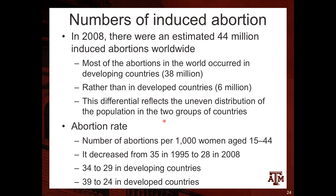This differential reflects the uneven distribution of population in the two groups of countries. The abortion rate — the number of abortions per 1,000 women between 15 and 44 years of age — decreased from 35 per 1,000 women in 1995 to 28 in 2008. These numbers declined from 34 to 29 in developing countries and from 39 to 24 in developed countries. So developed countries had higher rates back in 1995, but in 2008 they have lower abortion rates than developing countries.